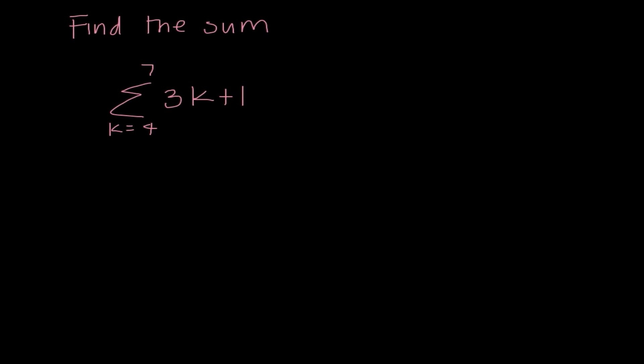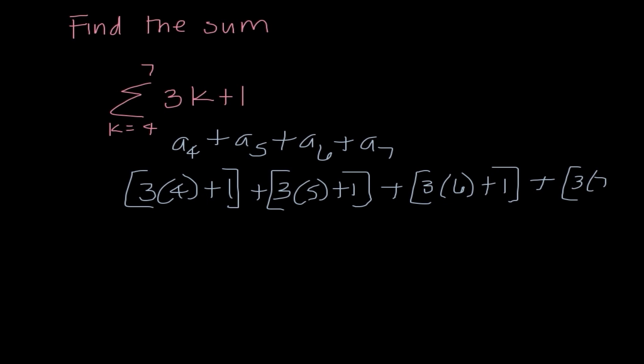Our next problem here, we notice we have the summation symbol, and we need to find the sum. This is the equation we're going to be using. It tells us the first term is when k equals 4, and the upper limit of summation is when k equals 7. So it really means I'm figuring out what is the fourth term, the fifth term, the sixth term, and the seventh term. So I'm going to do 3 times 4 plus 1, plus 3 times 5 plus 1, plus 3 times 6 plus 1, and lastly, 3 times 7 plus 1. So I have 13 plus 16 plus 19 plus 22, which equals 70.